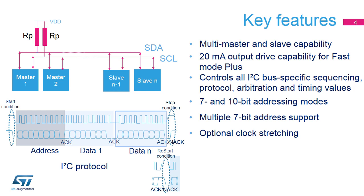The peripheral controls all I2C bus-specific sequencing, protocol, arbitration, and timing values. 7- and 10-bit addressing modes are supported, and multiple 7-bit addresses can be supported in the same application. The peripheral in master mode supports slave clock stretching. In slave mode, the clock stretching can be disabled by software.